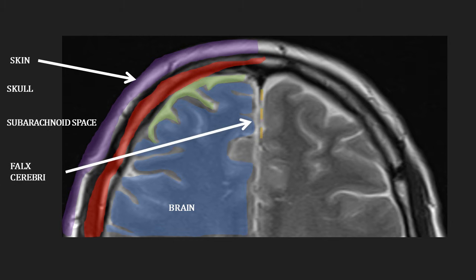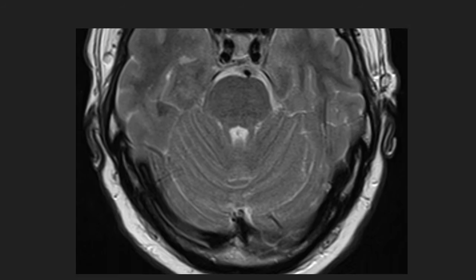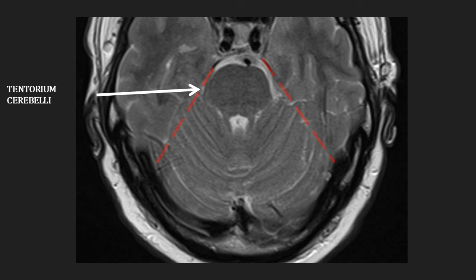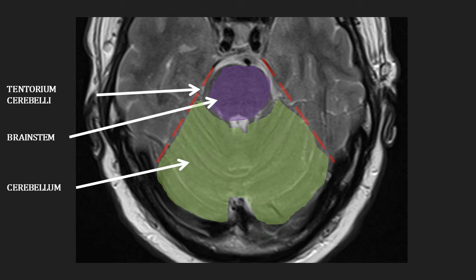The falx cerebri and tentorium cerebelli are exceptions in that they represent the dura and can be seen even in the absence of abnormality. Here, the falx is represented by the orange dashed line, and the tentorium cerebelli is more posterior and will be seen on the next slide. Looking at the posterior aspect of the brain, the red dashed line represents the tentorium cerebelli, separating the cerebellum from the cerebral hemispheres. The brain stem is highlighted in purple, anterior to the cerebellum, highlighted in green.